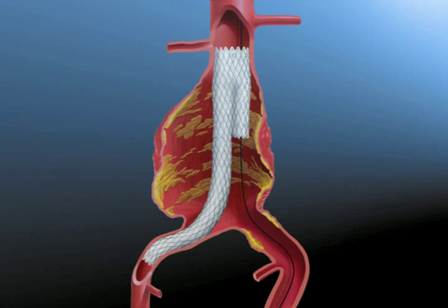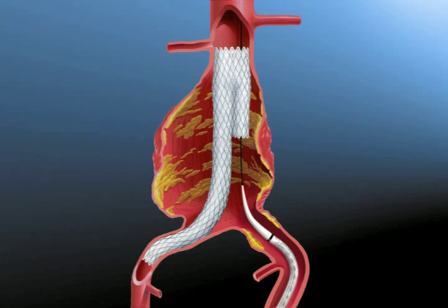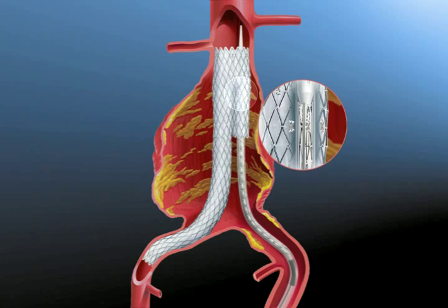To place the iliac stent graft, insert the Accelerant Delivery Catheter so that the proximal radiopaque marker on the iliac limb is aligned with the upper radiopaque markers on the contralateral gate.